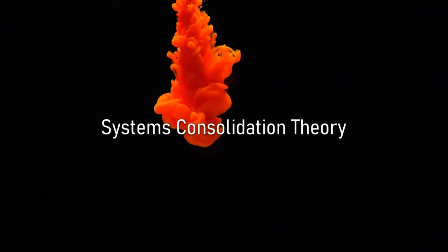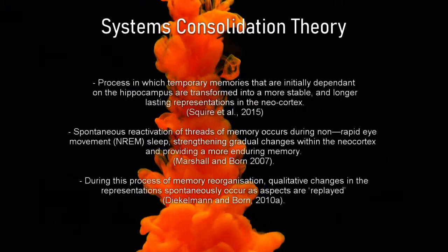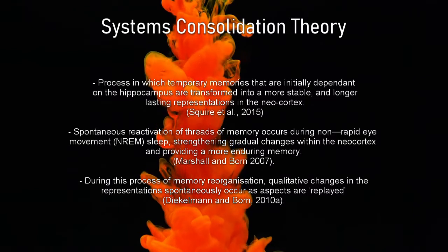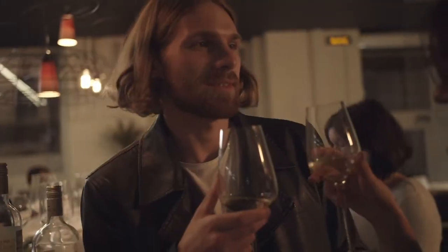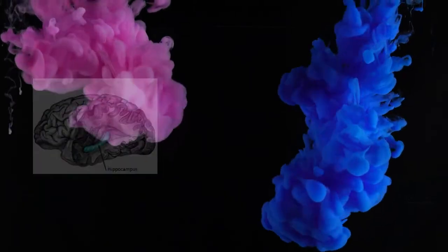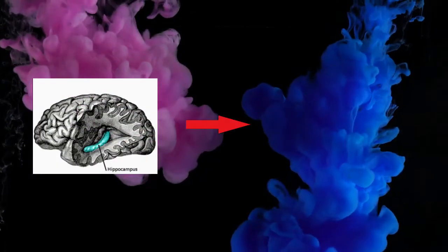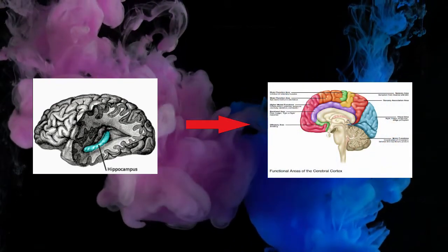Sleep spindles have proved time and time again to be related to a mechanism known as Systems Consolidation Theory, in which sleep facilitates the transfer of information temporarily stored in the hippocampus to long-term storage in the neocortex. Events that happen during the day are stored as episodic memories in the hippocampus. During sleep, these memories are reactivated in order to move them from the temporary storage of the hippocampus to the more long-term storage of the neocortex, the outer layer of our brain.